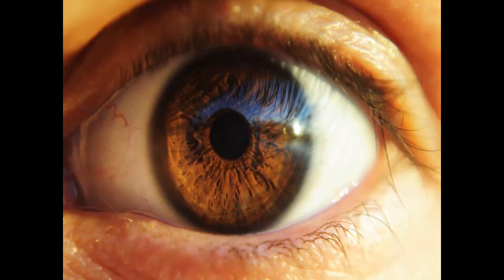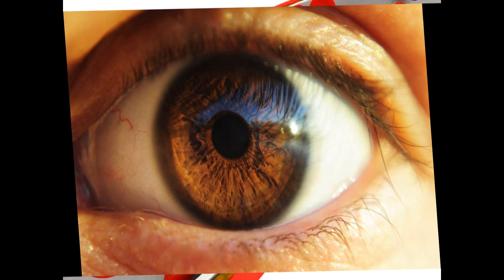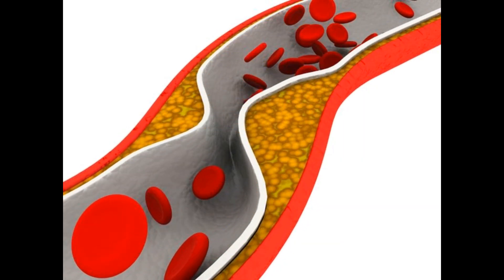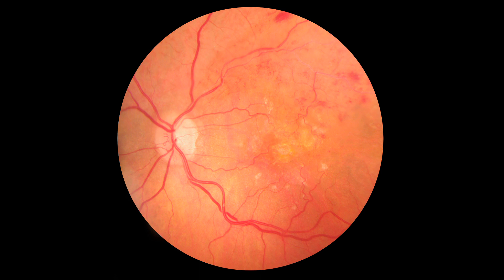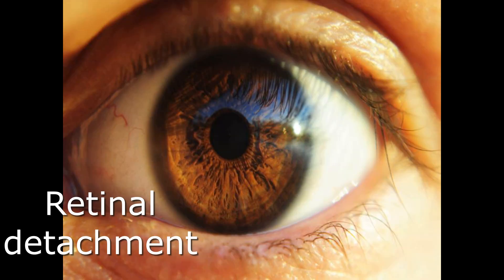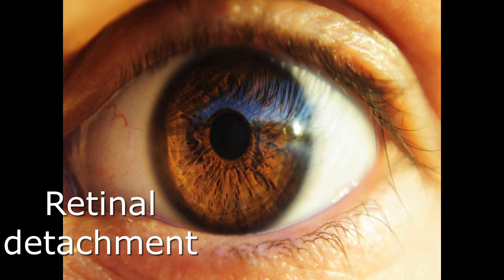Starting with the eyes: vision that is decreasing in a diabetic and is not improving with correction — either with glasses or even with surgery — could be due to vessel damage. Vessel damage will cause bleeding, swelling, and then scar formation at the back of the eye, which is called the retina. When the scar shrinks, it pulls the rest of the retina and detaches it from its base. This is what we call retinal detachment, and it is by far the most common cause of blindness in diabetics.